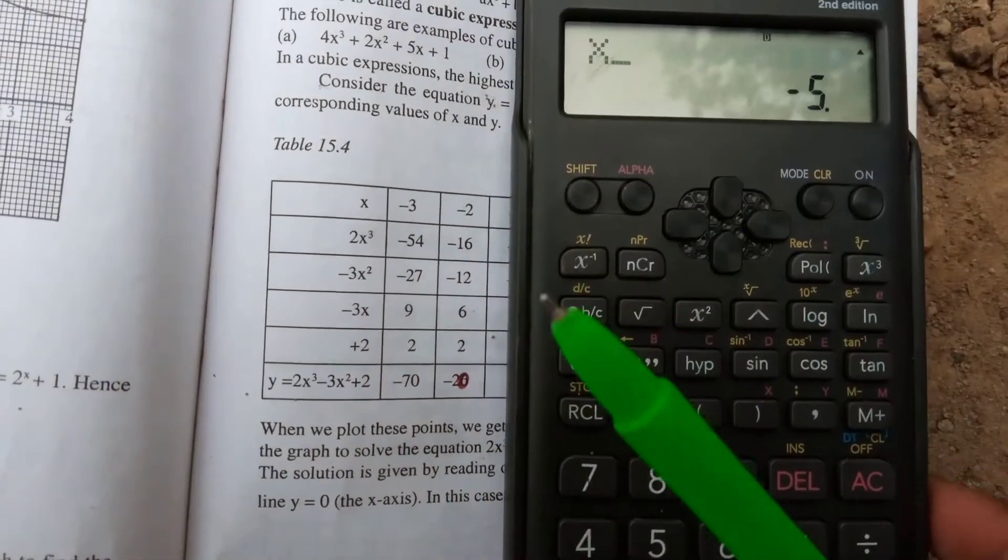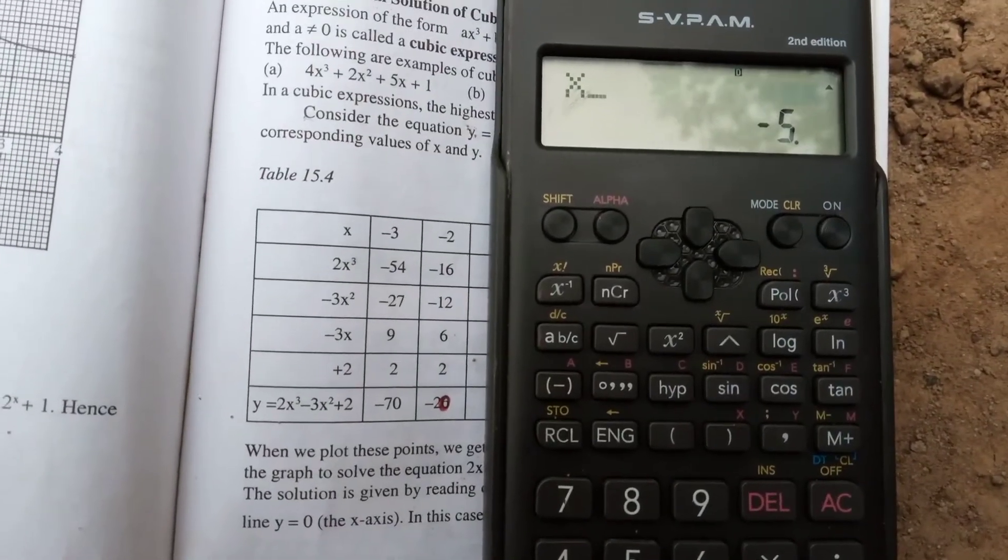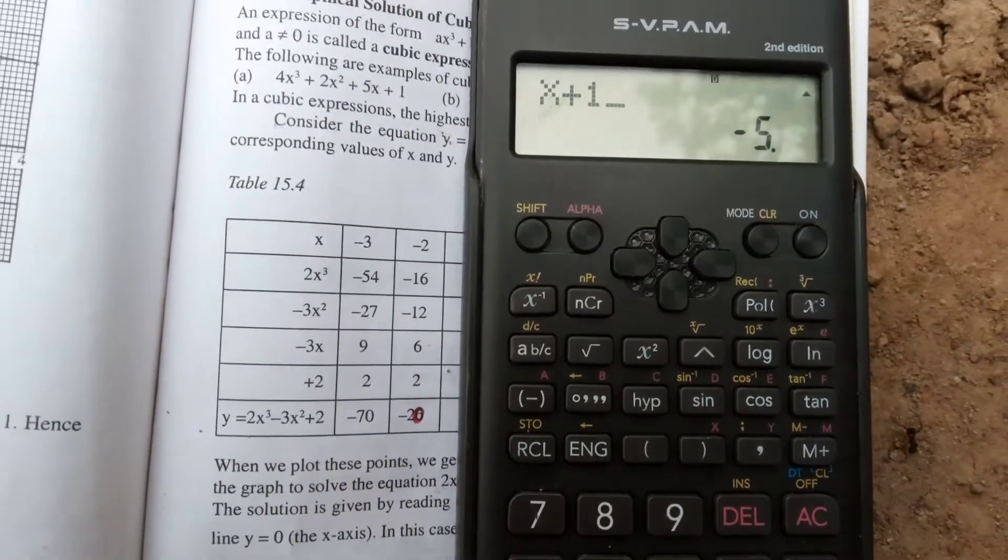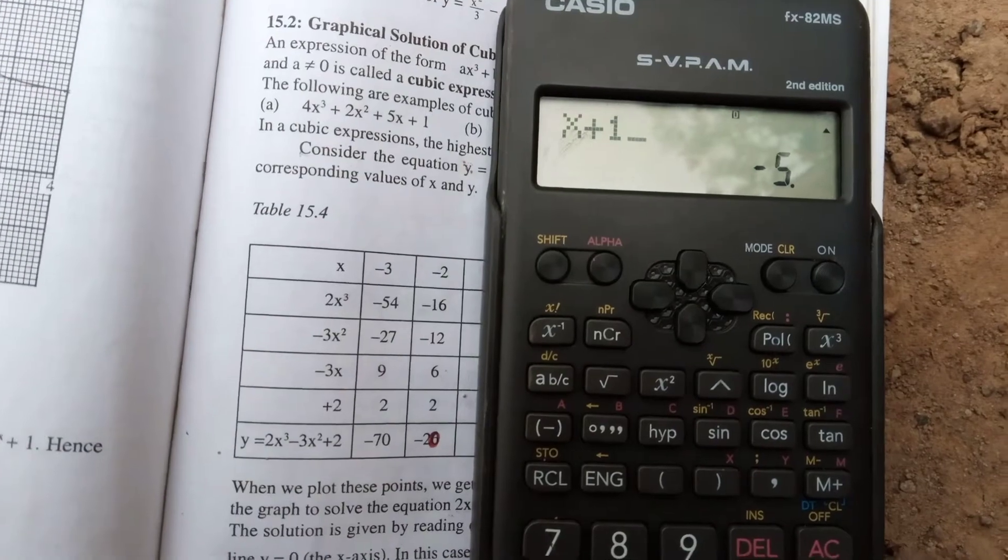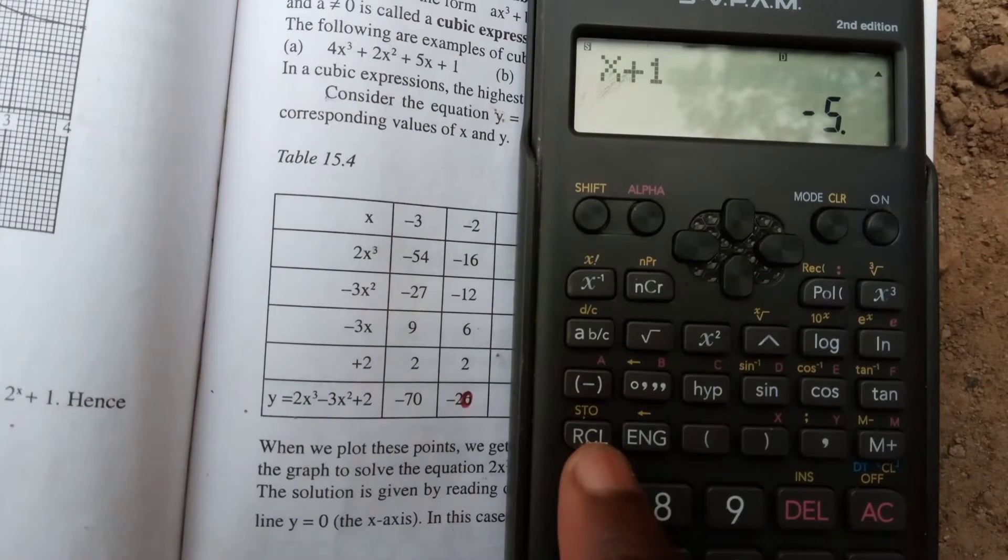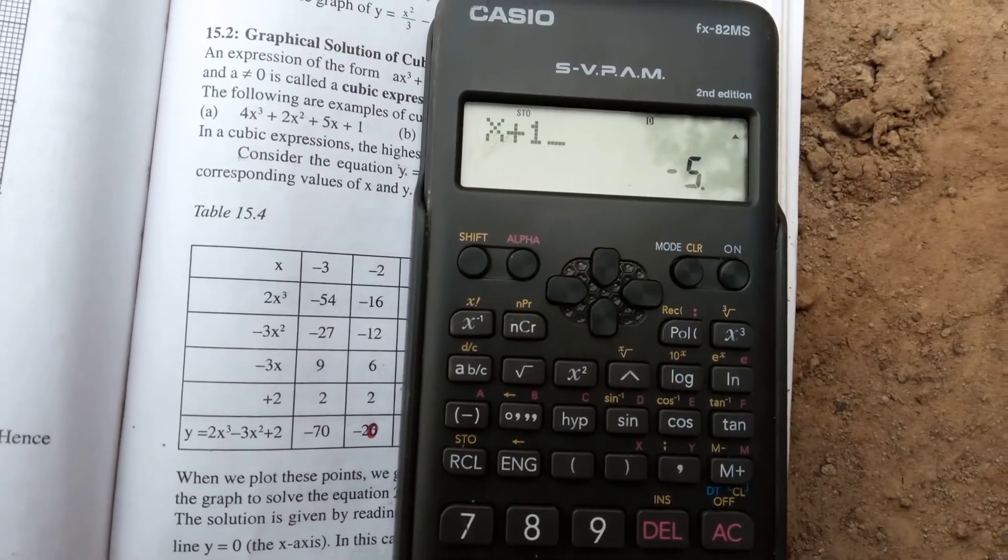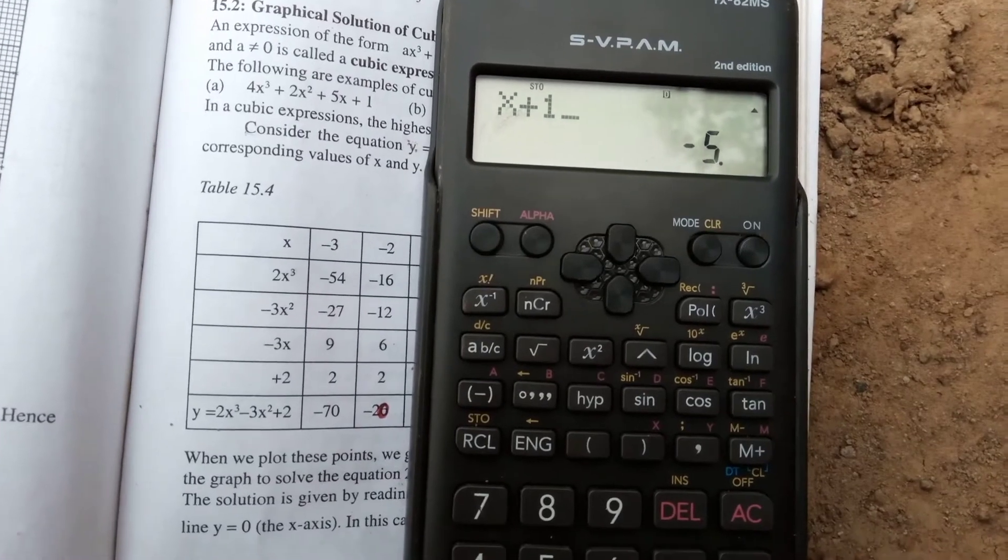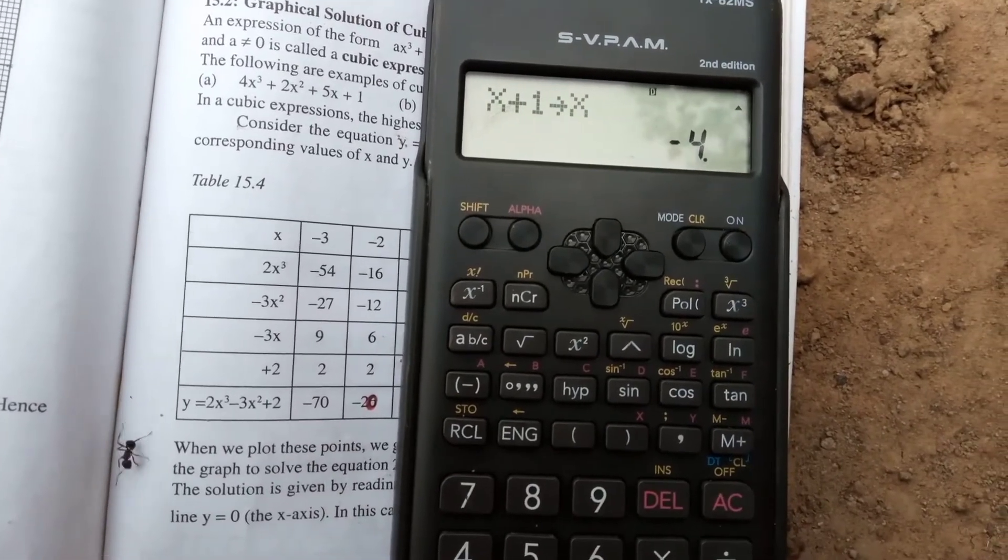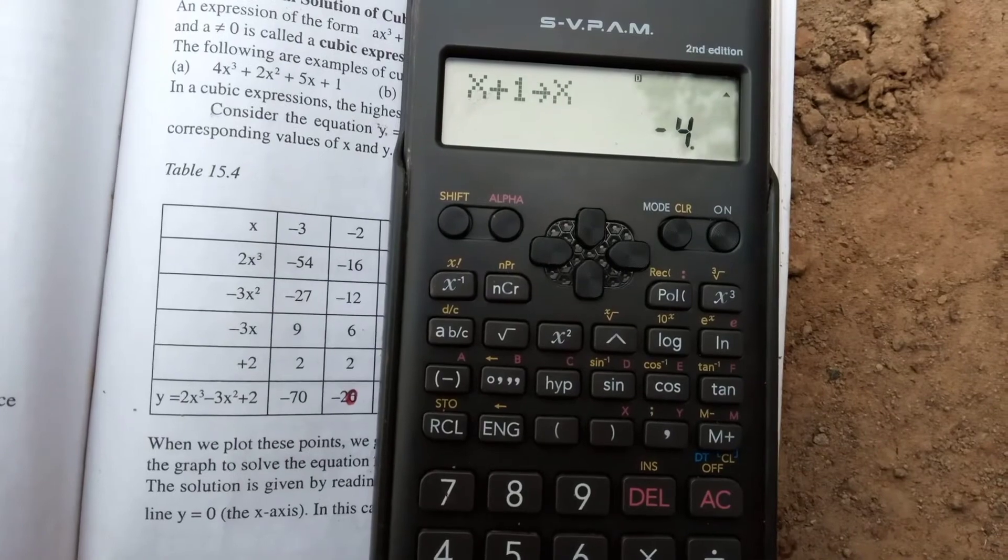Please note the range is 1 in each case, so it is positive 1. After that, press shift again, then RCL. You'll get it has written that manner. Then close the bracket. You'll get x plus 1, then an arrow pointing to x.